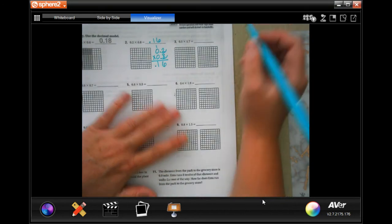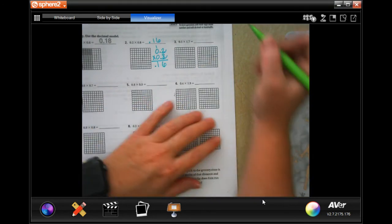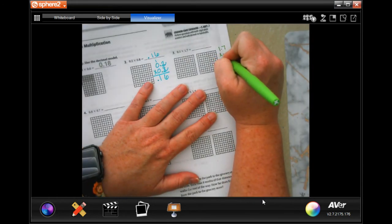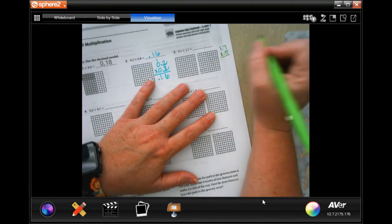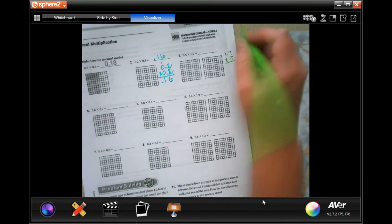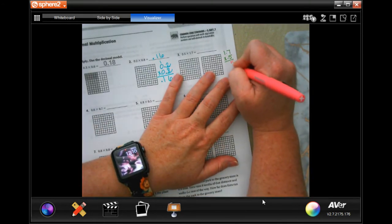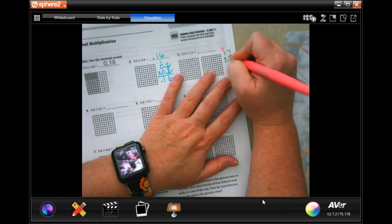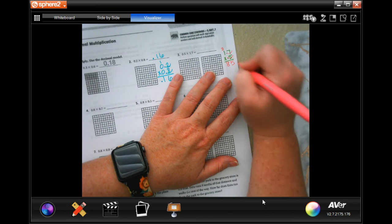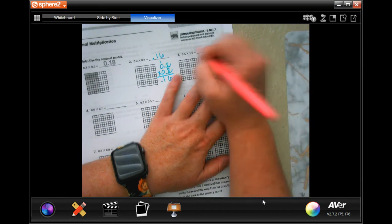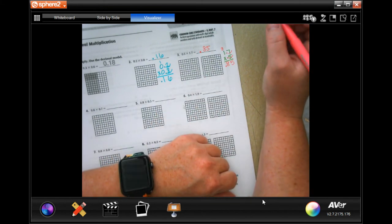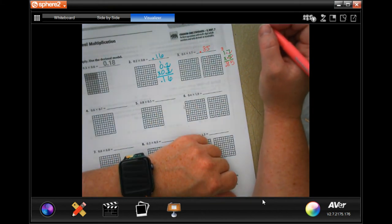Let's go ahead and do number 3. Number 3 says 1.7 times 0.5. You don't have to put the 0 in front of it. 5 times 7 is 35. We're going to put the 5 down. Carry our 3. 5 times 1 is 5, plus 3 is 8. Now, you went in 1, 2 places. We have to go in 1, 2 places. Your answer is 0.85. You can put a 0 before the decimal. You don't have to.